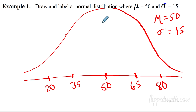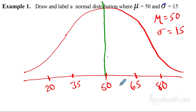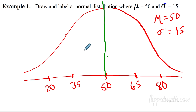Now I'll tell you some things about this to help you remember. If I take the mean and draw a line down the middle, each half of the curve is equal to 50% of the distribution — 50% of the data is on each side.